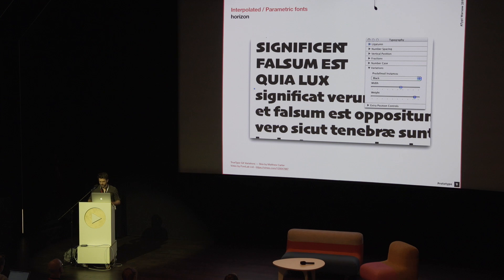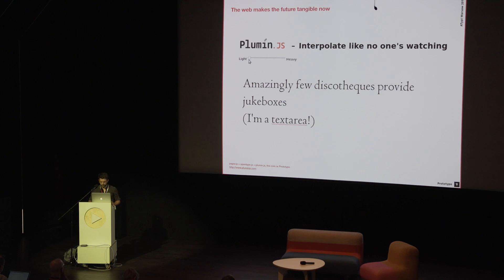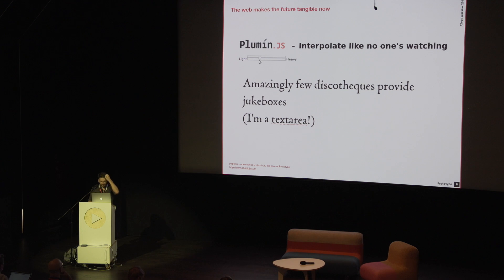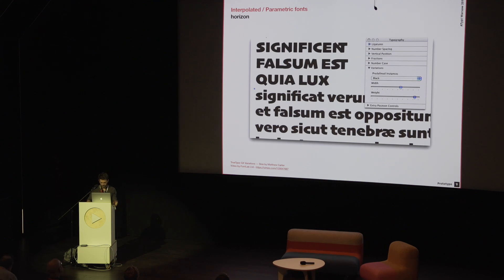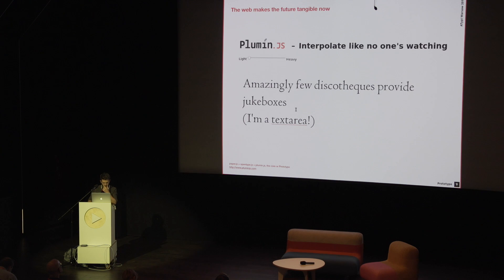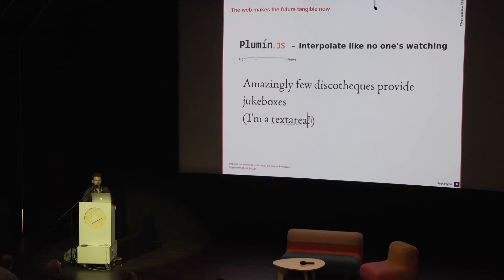OpenType Variations is of course another piece of technology that will play a key role in the upcoming revolution. And with parametric fonts and the web, the final piece of technology I believe will play a key role is the web itself, because the web already makes all this adaptation possible.